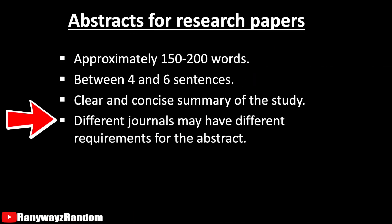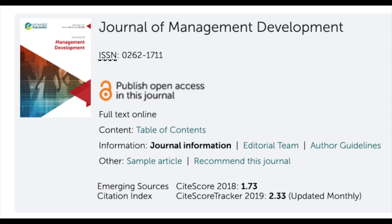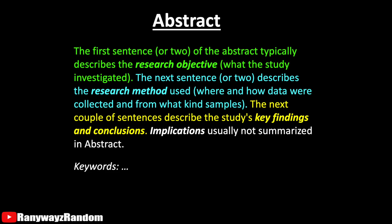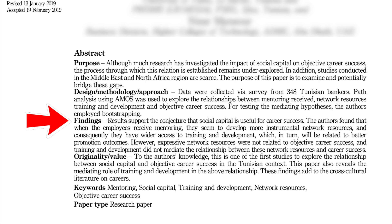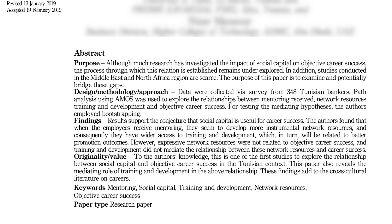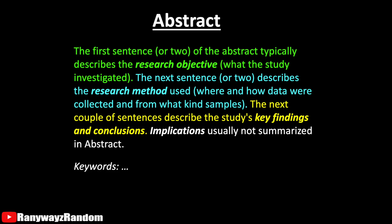It's important to note that different journals' requirements for the abstract can differ slightly. For example, the Journal of Management Development requires the abstract to use subheadings rather than a single paragraph. They use 'Purpose' for the research objective, 'Design/Methodology/Approach' to summarize the methodological approach, 'Findings' for key results, 'Originality/Value' to convey the value of the findings and implications, and 'Keywords.' Even so, the general components are essentially the same as the standard format.